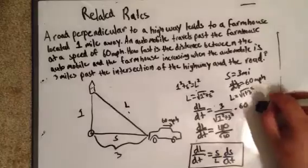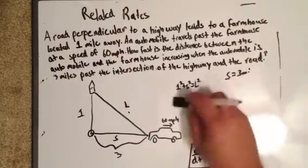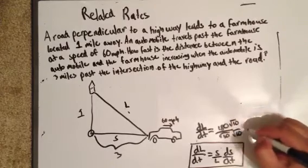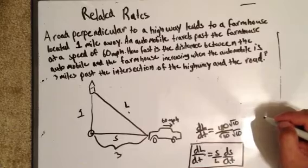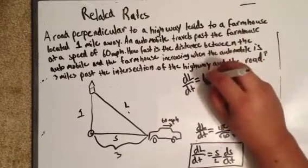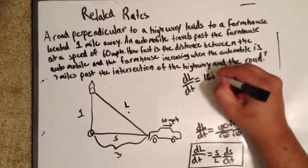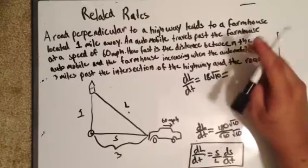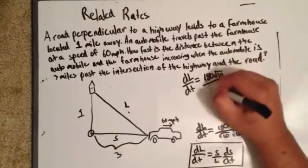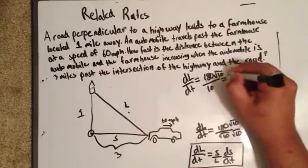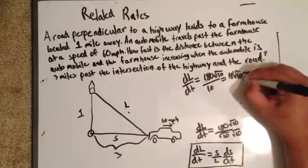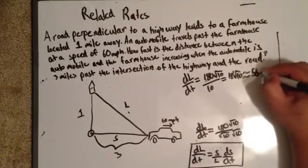We don't want a square root in the denominator, so we rationalize by multiplying by √10/√10. That gives us 180√10 / 10, which simplifies to 18√10, which is approximately 56.92 miles per hour.